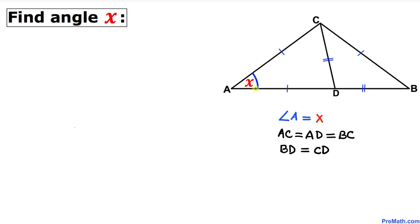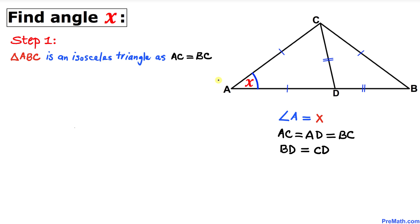Welcome to pre-math. In this video tutorial we have an isosceles triangle ABC such that angle A is X, side lengths AC and AD and BC are equal in length, and side length BD equals side length CD. Now we are going to find the value of angle X. Let's go ahead and get started with the solution.